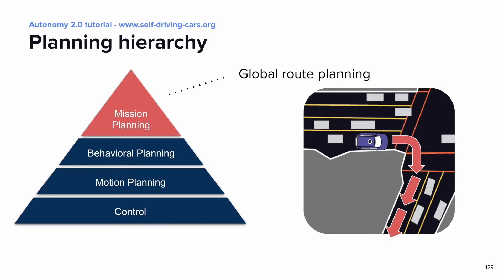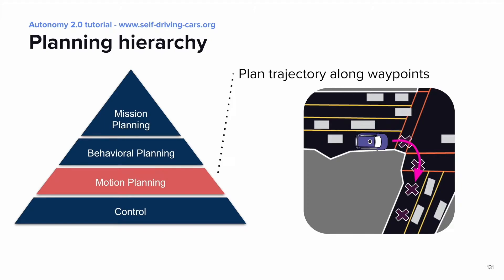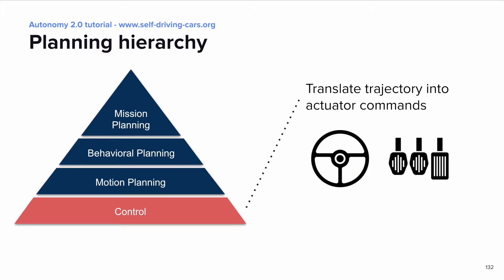There are in fact multiple layers in the hierarchy of planning tasks. On the very top, we have mission planning — global route planning — which you might know from your mobile phone, for example using Google Maps to reach a destination. The output is directions to the target in a high-level form, such as which roads to take. A layer below, we have behavioral planning, which means planning concrete waypoints on this route and/or defining high-level maneuvers. Below that is motion planning, which generates an actual trajectory through these waypoints. Finally, there is the control layer, which translates the trajectory into actuator commands. We mainly focus on the two intermediate layers: behavioral planning and motion planning.